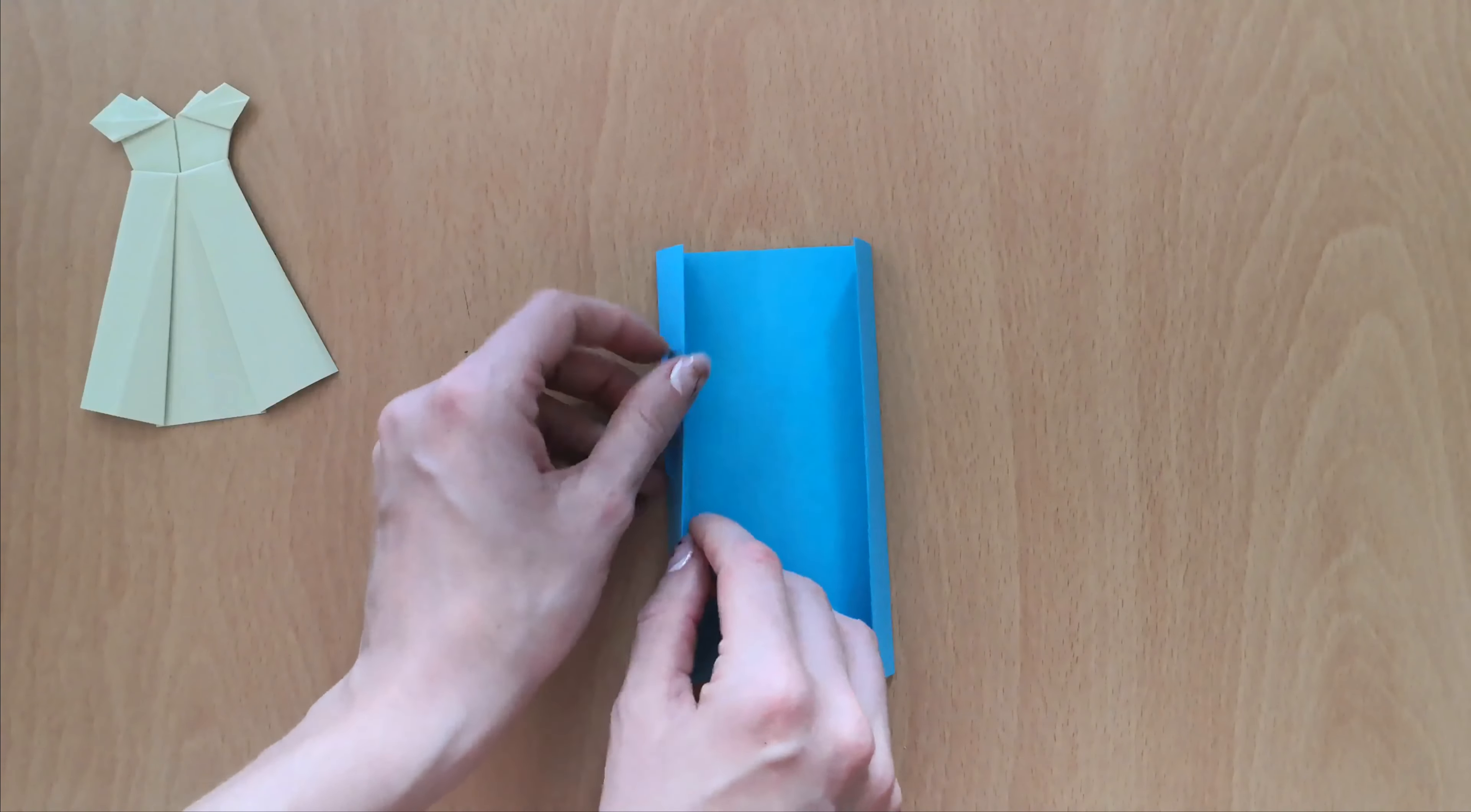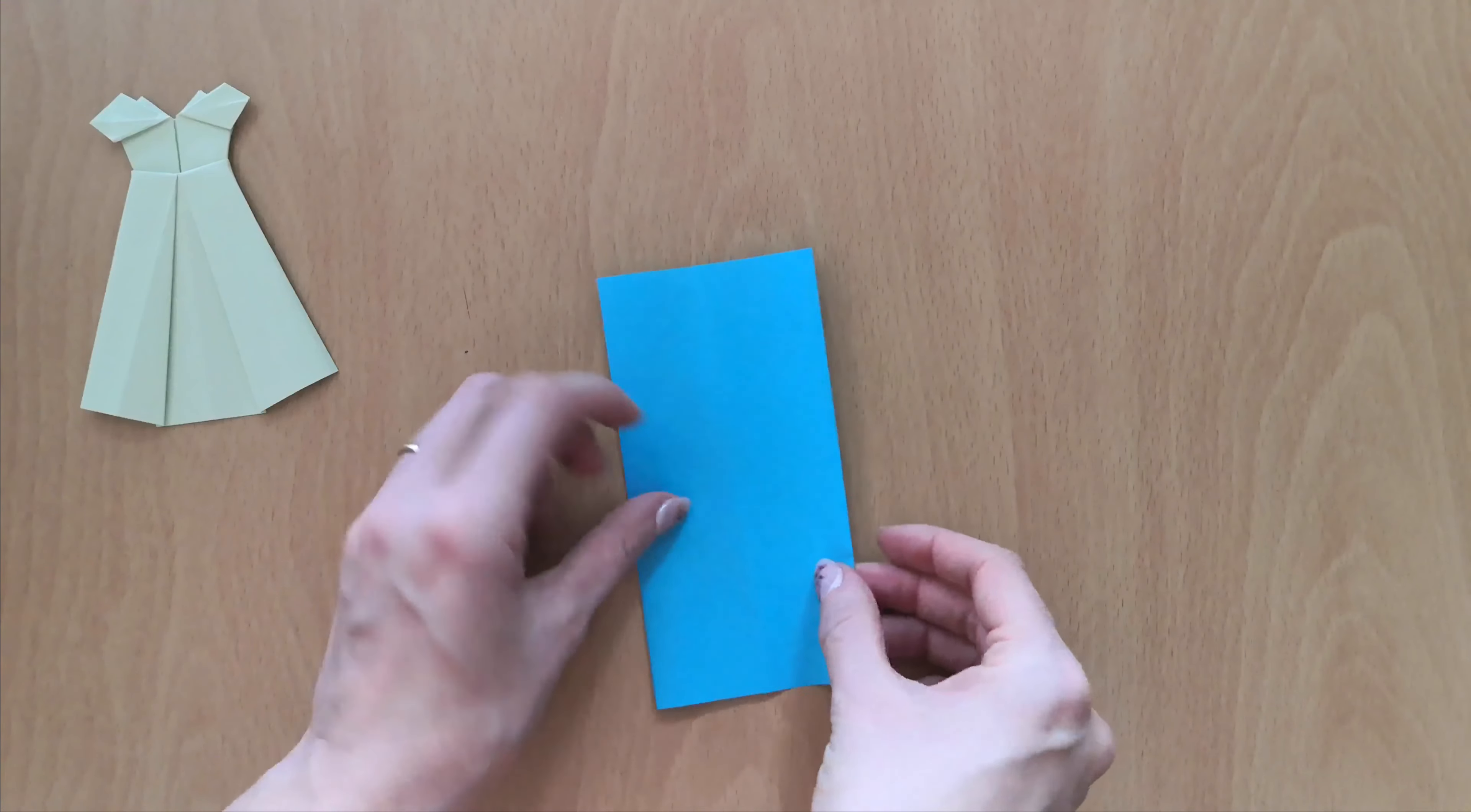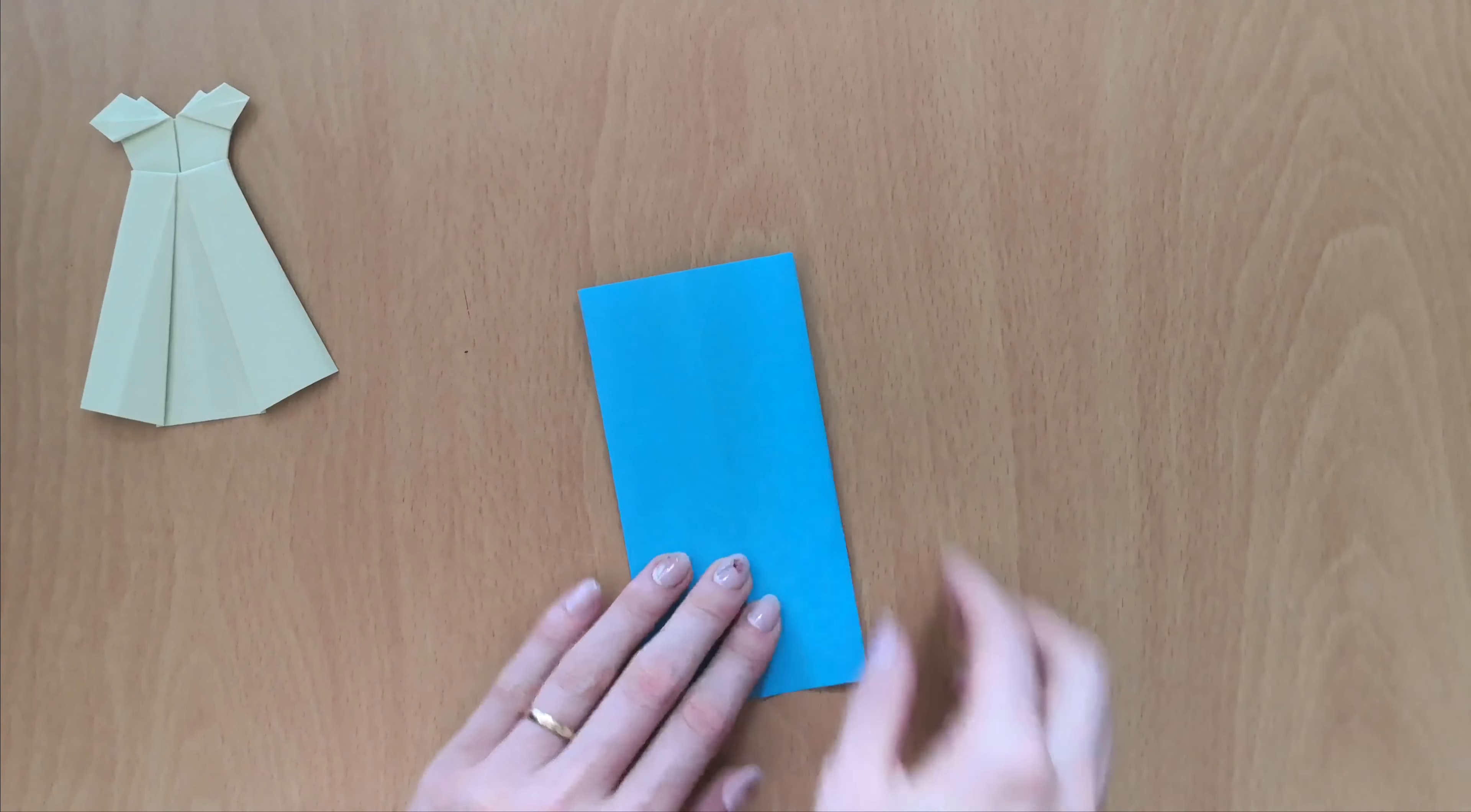And the same on the left side. And roll it over like this. Now flip your paper over and fold the sides of it to the center line.